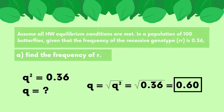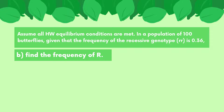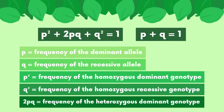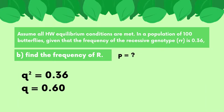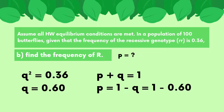The next part of the question asks for the frequency of the dominant allele. Since we're looking for the dominant allele frequency, we know that we're looking for p. We already solved for q from the previous part. To find p, we use the equation p + q = 1. Rearranging and substituting the value for q, we find that p = 0.4.